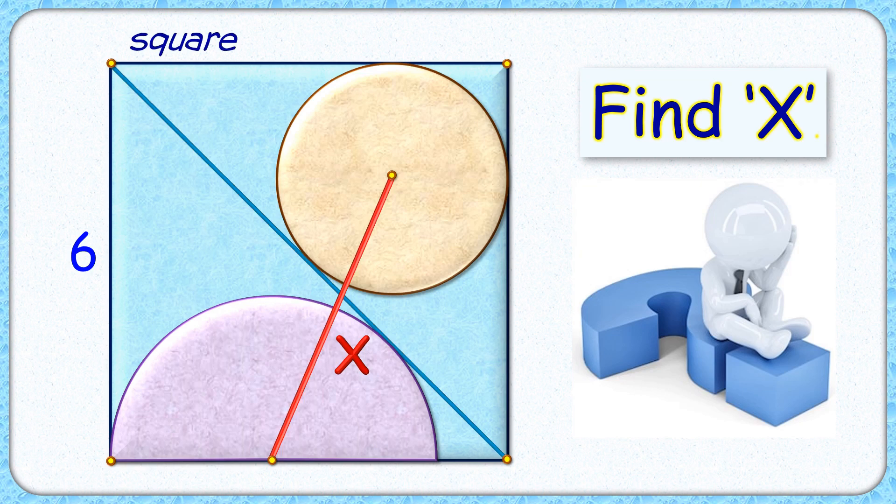Welcome to this interesting question. Given to us is a square with side length 6 centimeters. The square is divided into two triangles with the help of a diagonal. In the top triangle a circle is drawn, and in the bottom one a semicircle is drawn. With the given data we have to find the distance between the centers of this circle and semicircle, or we have to find the value of x.